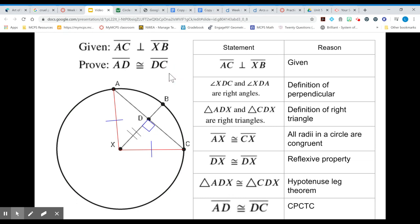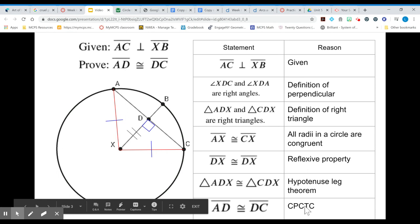So finally by CPCTC we can say that the third side of the triangles are congruent since the triangles themselves are congruent and hopefully you remember that CPCTC means congruent parts of congruent triangles are congruent.